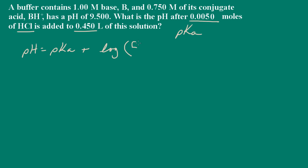So let me get this in here. That's the base. And here is the conjugate acid. And we know the pH. It's 9.5. And that's equal to pKa plus the log of this base acid ratio. So the base is 1 molar and the conjugate acid is 0.75 molar.